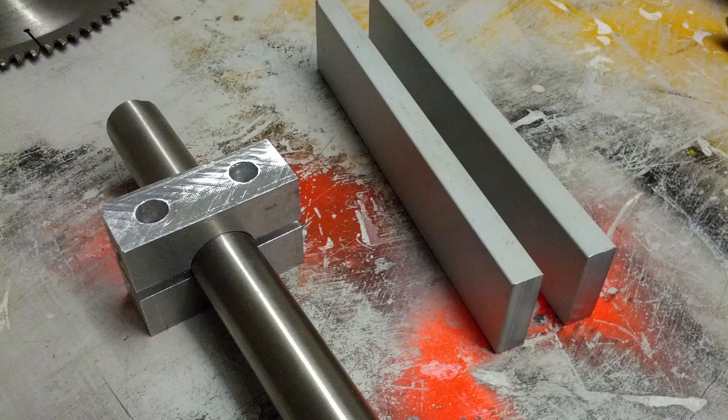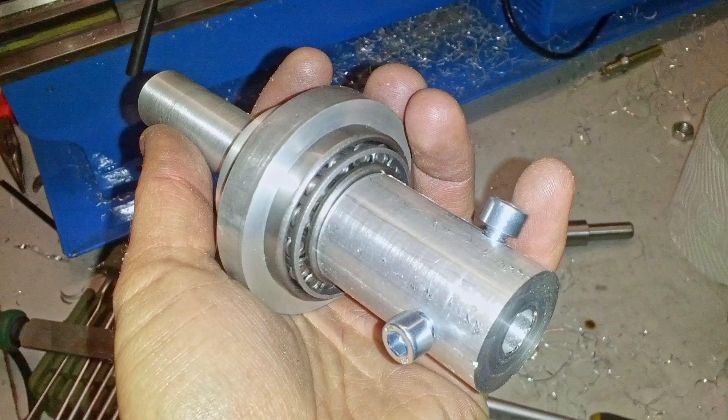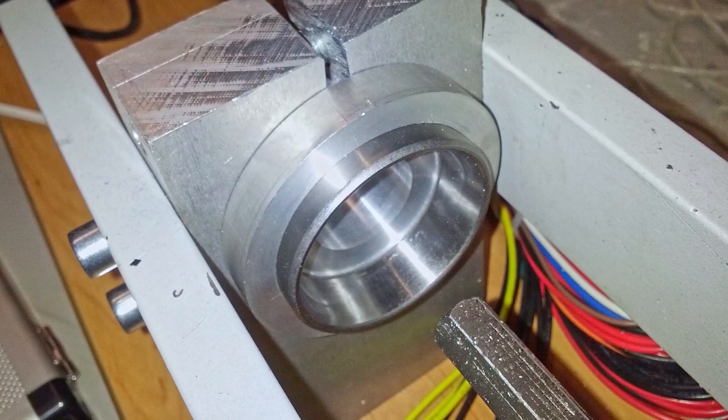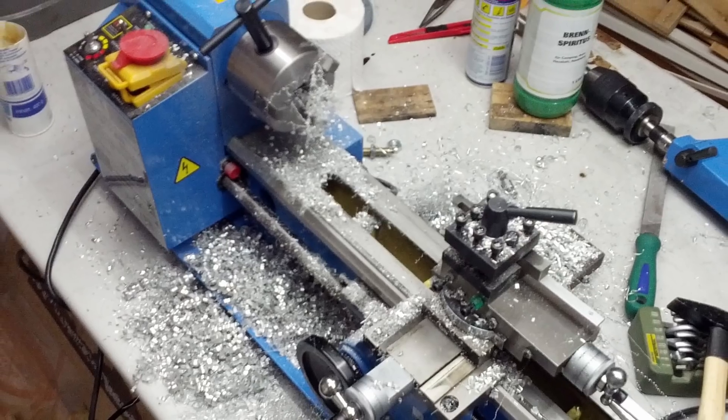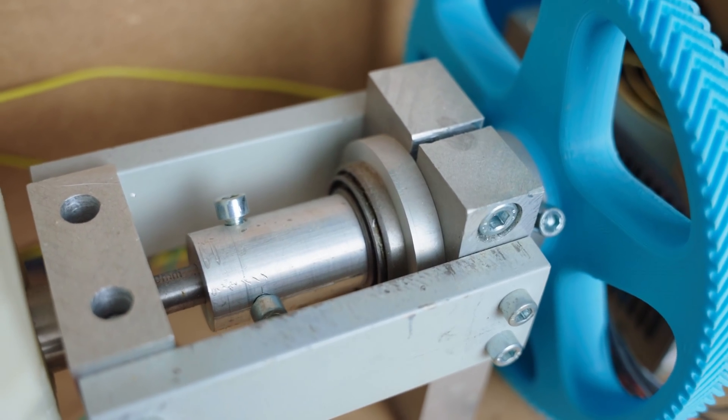So first order of business was to build a thrust bearing assembly, and this is way overbuilt, but it was fun to build. I had just gotten my mini lathe at the time and just making a few bearing seats and shafts and stuff, that was super fun. In the end, this thrust bearing I think is the best part of the entire extruder.